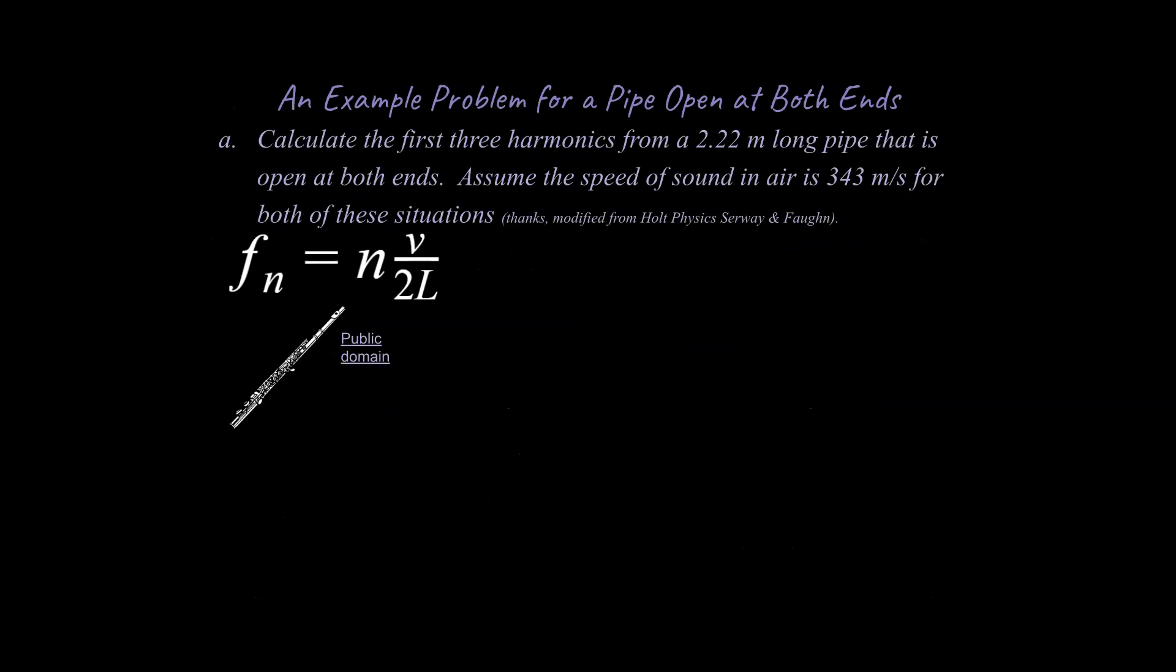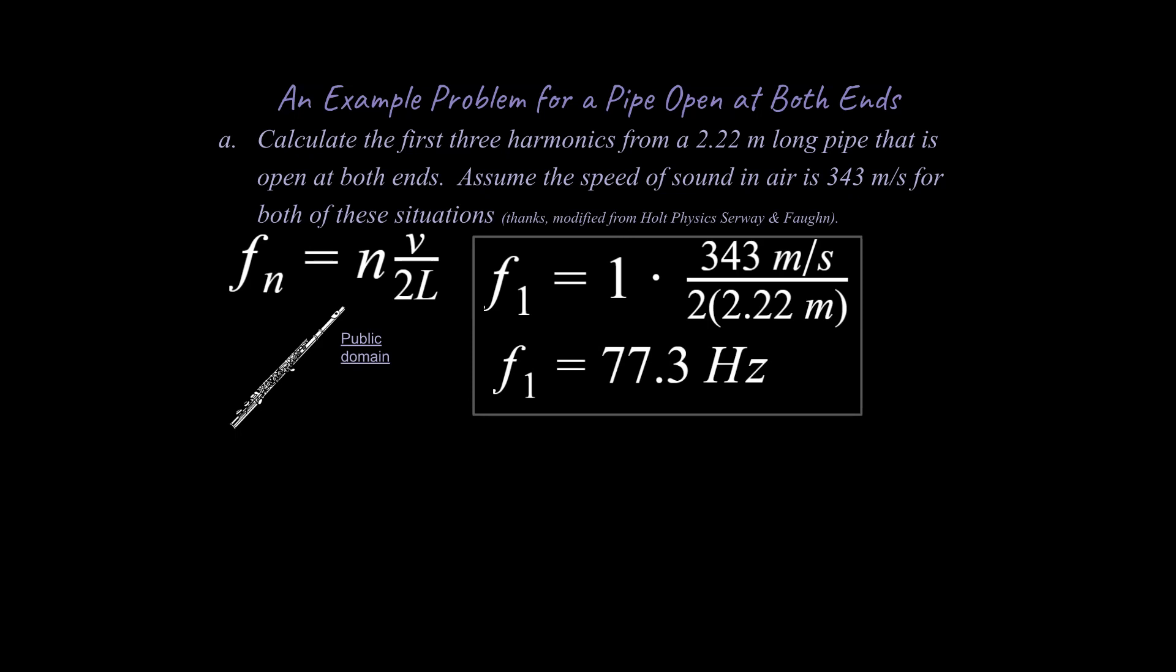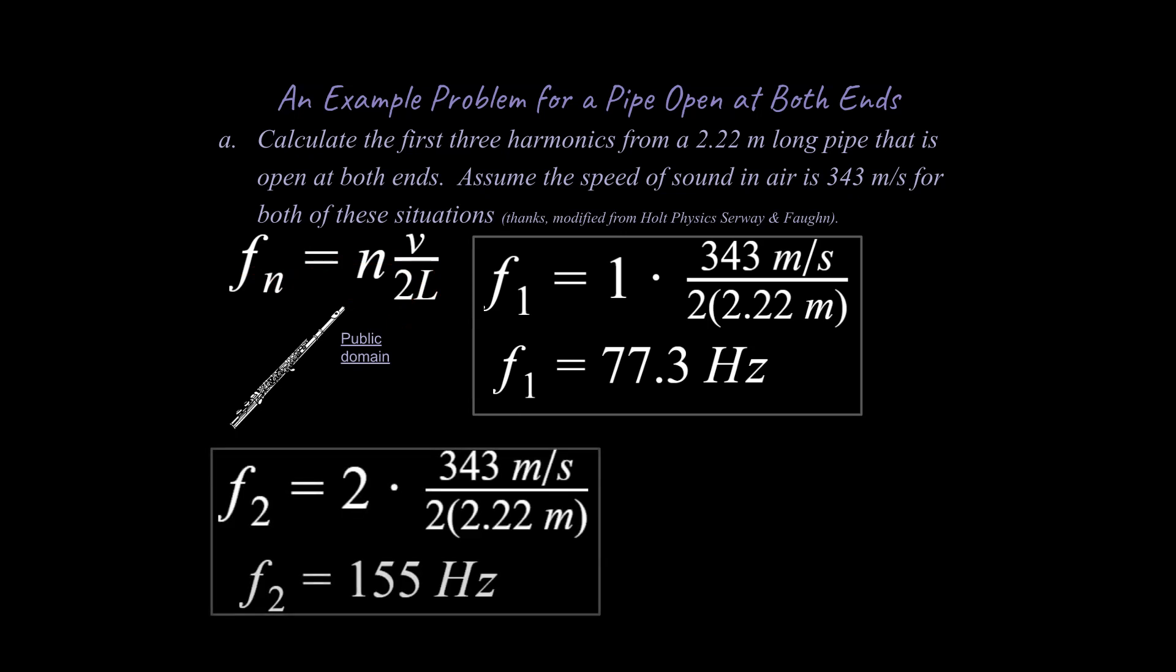Alright, and so let's try an example problem. So it says calculate the first three harmonics from a 2.22 meter long pipe that is open at both ends. So something like a flute, but longer. Assume the speed of the sound in the air is given. We're going to do an A part and a B part. So what would go into this N value for the fundamental frequency? Well, that's going to be one, right? And then you plug in the rest of the numbers, and you end up with a fundamental frequency of 77.3 hertz. Well, how would we do this problem then if we changed it and said, we want the second harmonic. What's that going to be? Well, we're going to do something very similar. We're just going to plug in a different harmonic number, a different number two here, and we ended up with 155 hertz. How about for the third harmonic? That's right, pretty much exactly the same thing while changing the N value. And so we go ahead and do that, and we ended up with 232 hertz.